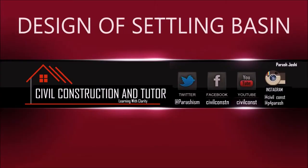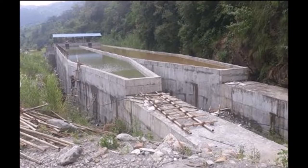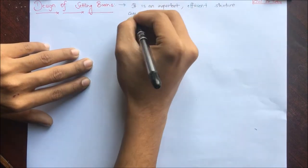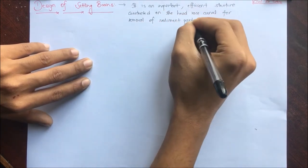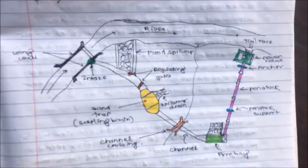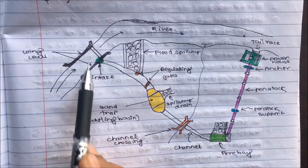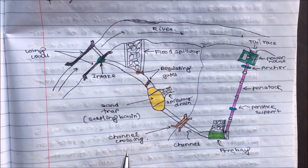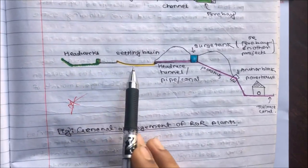Welcome to Civil Construction and Tutor. In this video, I'll discuss the design of a settling basin. This is how a settling basin looks in the real field. It is an important and efficient structure constructed on the headrace canal for removal of sediment particles. It is generally provided in run-of-river type projects. In a plan of a run-of-river plant, we have the intake, the canal, and the sand trap — known as the settling basin — located here, followed by the channel crossing.